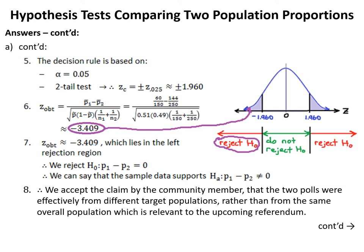Step 7: Z obtained of minus 3.409 falls into the left rejection region, so we reject H0 that P1 minus P2 equals zero. The sample data supports HA that P1 minus P2 is not equal to zero. Step 8: therefore, we accept the claim that the two polls were effectively from different target populations rather than from the same overall community relevant to the upcoming referendum.